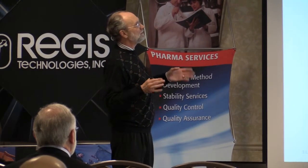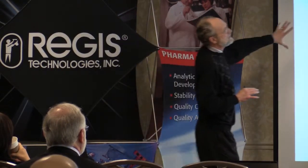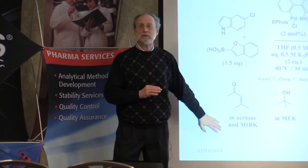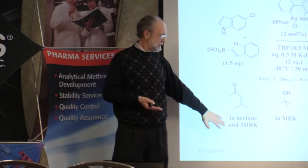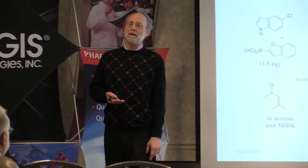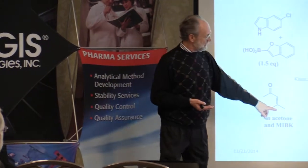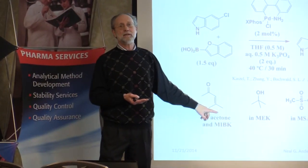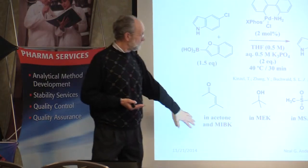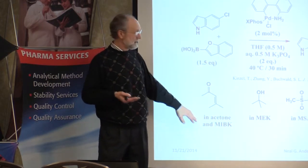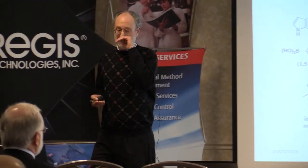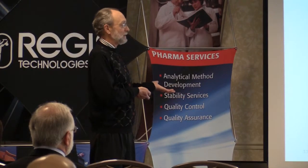Anticipating impurities that could be around: the deboronation would be a byproduct. If you've run a reaction in acetone under acidic or basic conditions, you will wind up generating mesityl oxide. Mesityl oxide is susceptible to soft nucleophiles via 1,4-addition. Mesityl oxide is also present in methyl isobutyl ketone (MIBK), because it comes from acetone with dehydration and then hydrogenation of the double bond. So anticipate what's going to be around in your solvents.